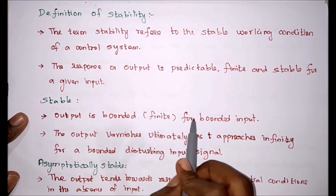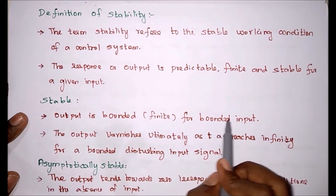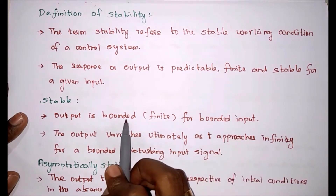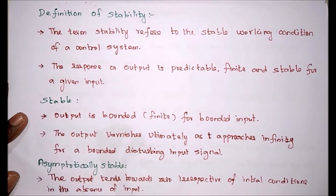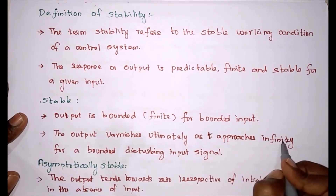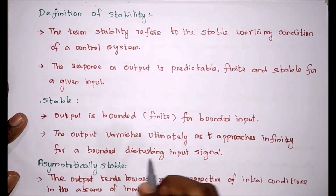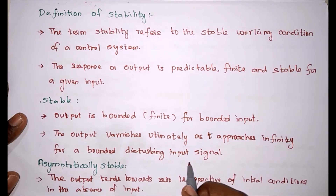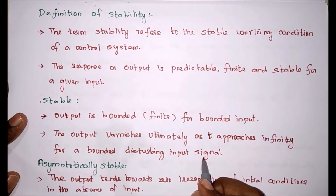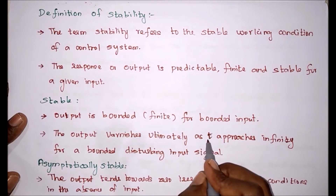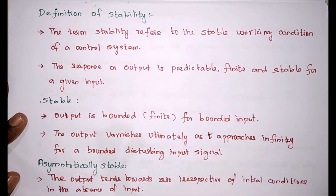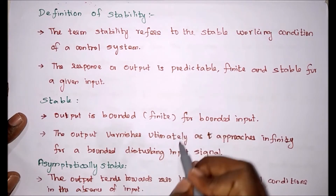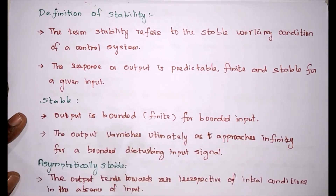For a stable system, the output is bounded for a bounded input. It means for finite input, the output is also finite. Also, the output vanishes ultimately as time approaches infinity for a bounded disturbing input signal. When we supply a disturbing input signal, the output will vanish when time goes to infinity. These two conditions define a stable system.